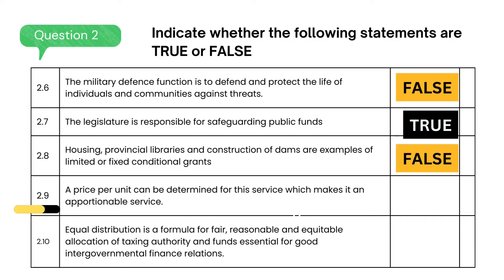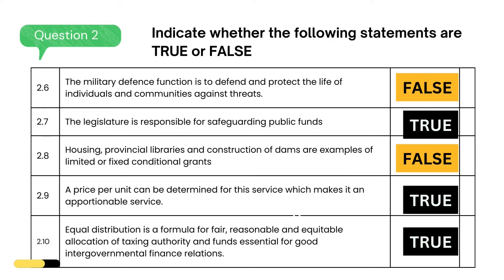A price per unit can be determined for this service, which makes it an apportionable service — the answer is true. Equal distribution is a formula for fair, reasonable, and equitable allocation of taxing authority and funds essential for good intergovernmental financial relations — the answer is true.